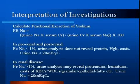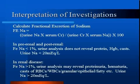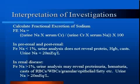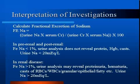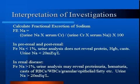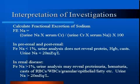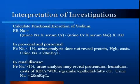Now that you know what to order, you need to interpret your investigation results. Patients with pre-renal or post-renal disease often have a fractional excretion of sodium less than 1%, with unremarkable urinalyses — no protein, no blood, no casts. Urine sodium is low and specific gravity may be high, suggesting dehydration. Patients with renal dysfunction often have a fractional excretion of sodium greater than 1%, with protein, blood, or casts on urinalysis, and urine sodium greater than 20, often greater than 40. Patients with proteinuria should have a 24-hour urine collection to quantitate protein.